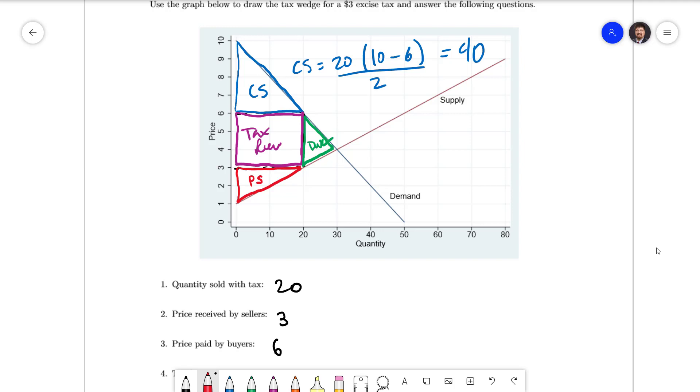For the producer surplus we also have a triangle. It's the red one this time. Base of 20 again but this time a height of 3 minus 1. Divide that by 2. Comes out to 20.